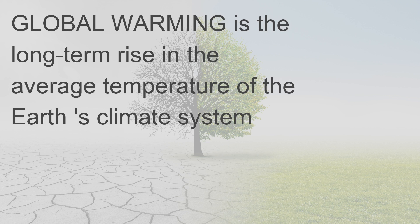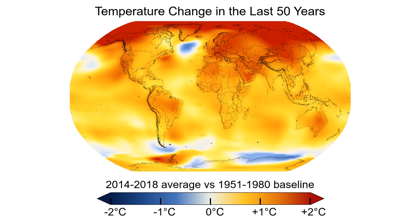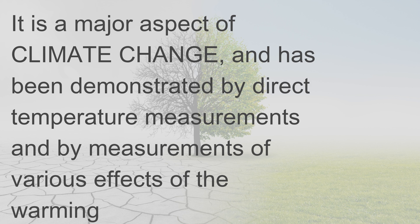Global warming is the long-term rise in the average temperature of the Earth's climate system. Average global temperatures from 2014 to 2018 compared to a baseline average from 1951 to 1980, according to NASA's Goddard Institute for Space Studies. It is a major aspect of climate change and has been demonstrated by direct temperature measurements and by measurements of various effects of the warming.